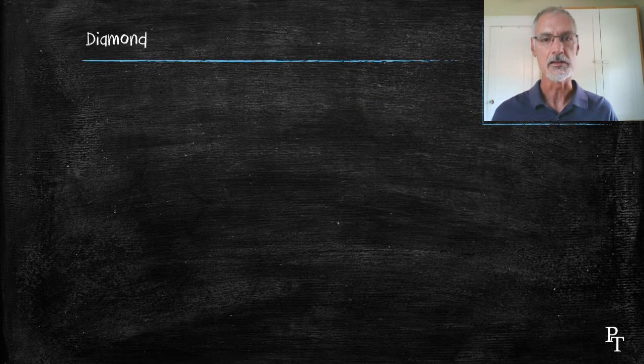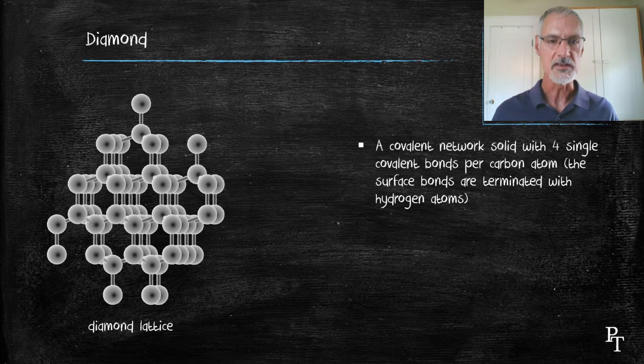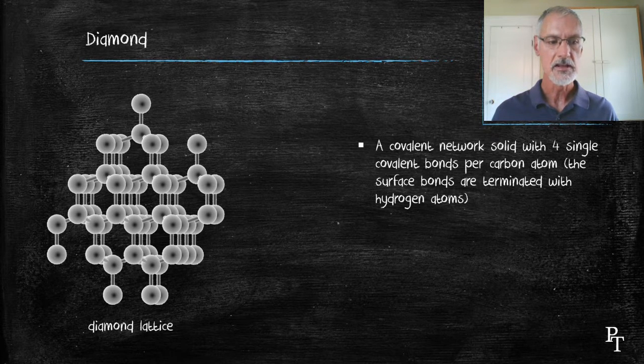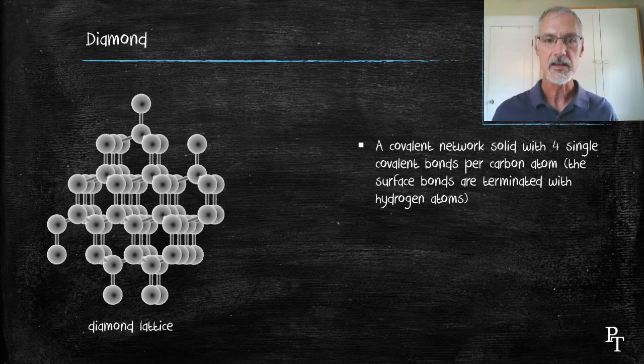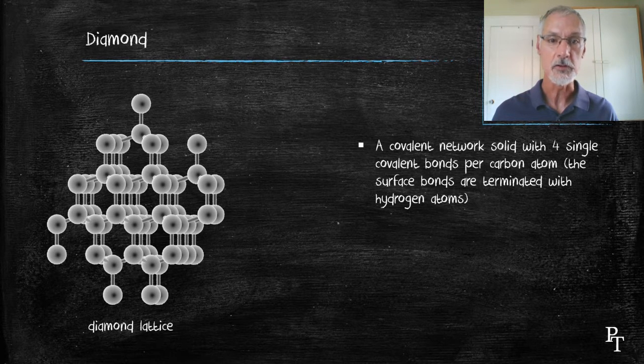Let's start off by taking a look at the properties of diamond. Here I have a microscopic view, or sketch of at least what they think diamond looks like. All carbon atoms connected covalently to each other. So every single carbon is connected covalently to four others.